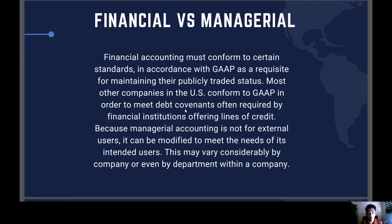Most other companies in the U.S. conform to GAAP in order to meet debt covenants often required by financial institutions offering lines of credit. So in the U.S., companies are more based on and follow GAAP. Because managerial accounting is not for external users, it can be modified to meet the needs of its intended users. This may vary considerably by the company or even by the department within the company.